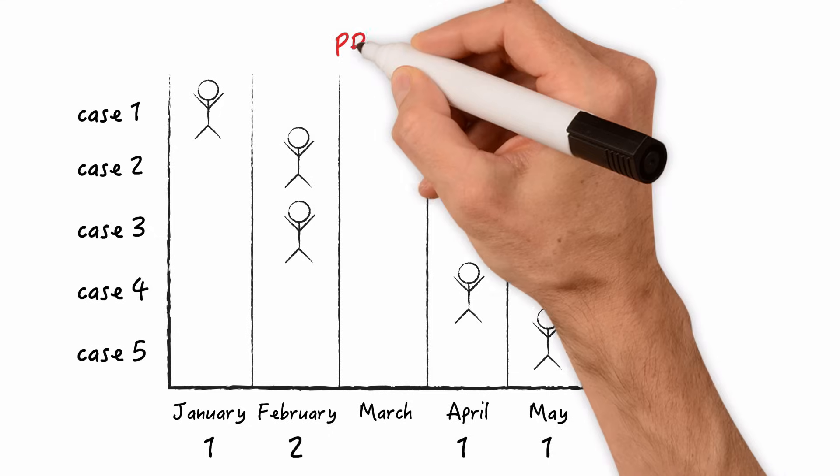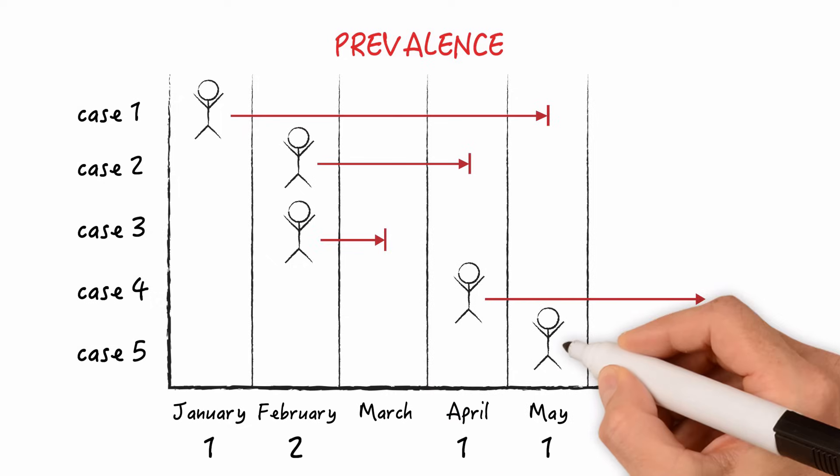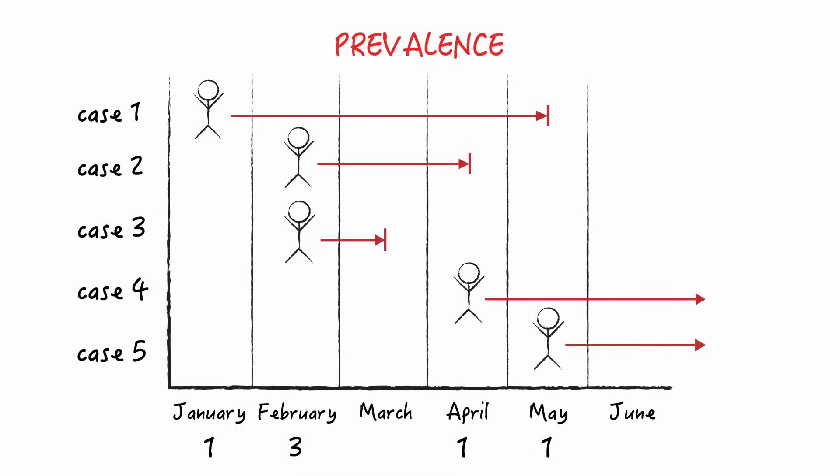Now prevalence also takes into account the duration of the disease. Let's say case number one is cured in May, case number two is cured in April, case number three in March, case four and five during the second half of the year. Now let's look at the prevalence of tuberculosis in these months. Let's also just focus on the numerator or the prevalent cases during each month. We have one case in January, three cases in February, three in March, three in April, three in May and two in June.